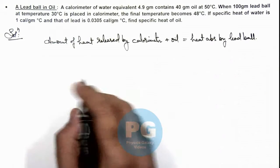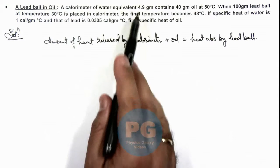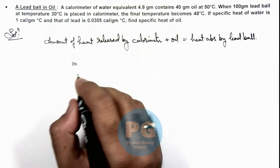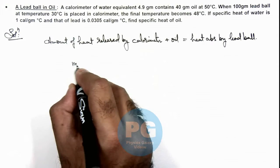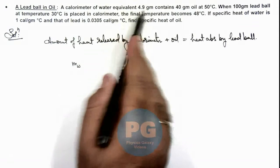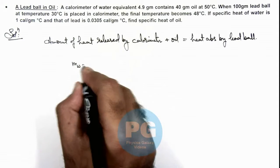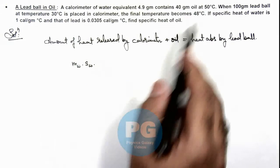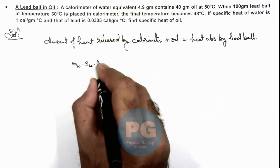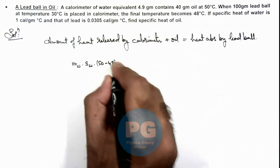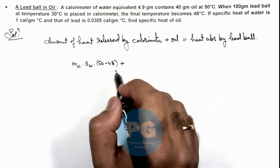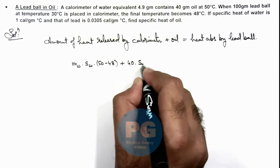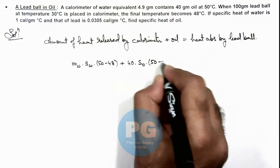For the calorimeter, its water equivalent is 4.9, so the amount of heat released by the calorimeter is: mass of calorimeter, which is water equivalent, multiplied by specific heat of water, multiplied by the change in temperature — it is dropping from 50 to 48, so we write 50 minus 48. Plus the heat released by oil, that is 40 gram of oil multiplied by specific heat of oil, multiplied by again 50 minus 48.